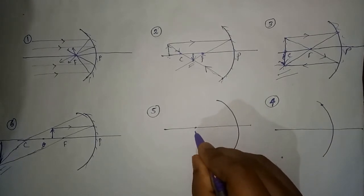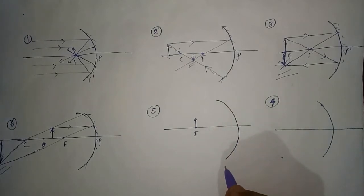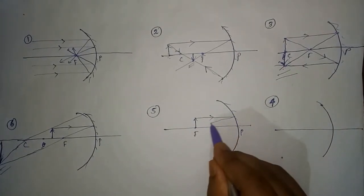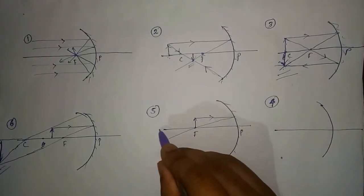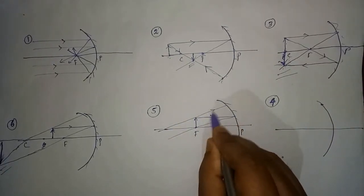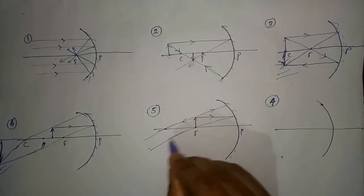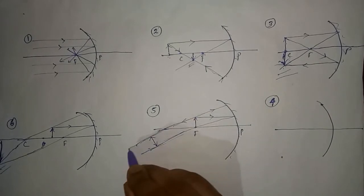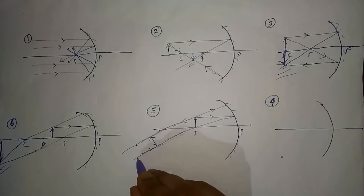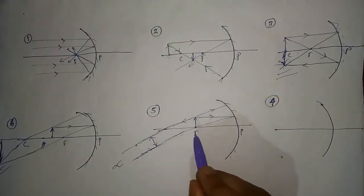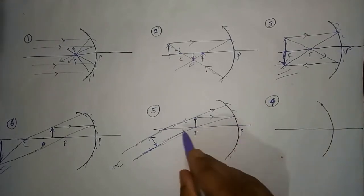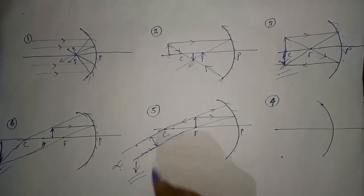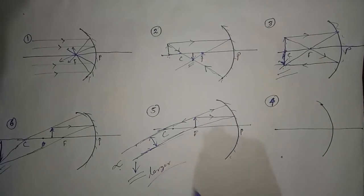Case 5: when the object remains at the focus. One ray will go parallel to the principal axis and pass through the focus after reflection. The other ray will go through the center of curvature and, after reflection, trace the same line. We can notice in the figure that the two reflected rays are parallel to each other — they will not cross at any finite distance. In other words, the image will be produced at infinity. The nature of the image will be real and inverted, and the size of the image will be highly enlarged.